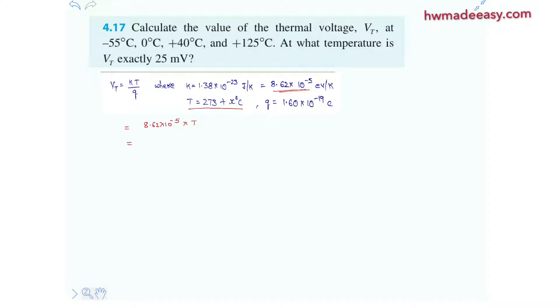So here at T equals to minus 55 degrees Celsius we will get 8.62 multiplied with 10 to the power of minus 5 multiplied with minus 55 degrees Celsius. So that is nothing but